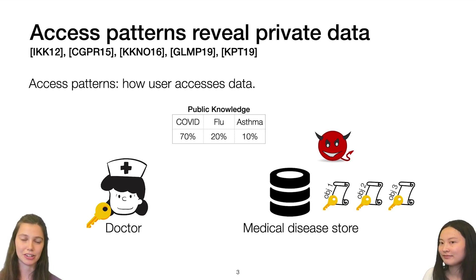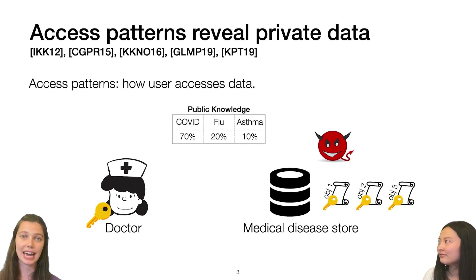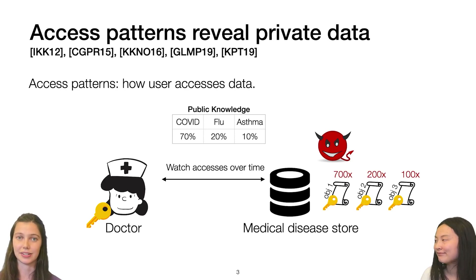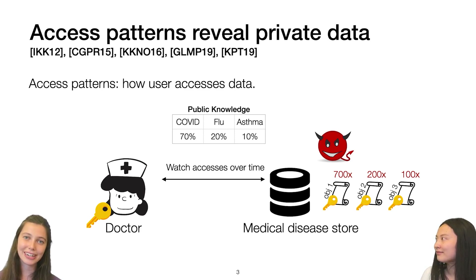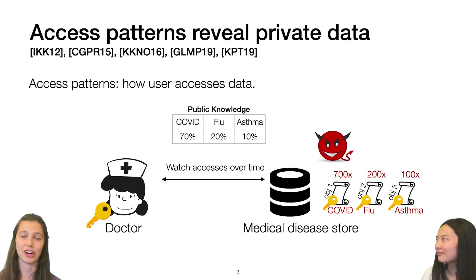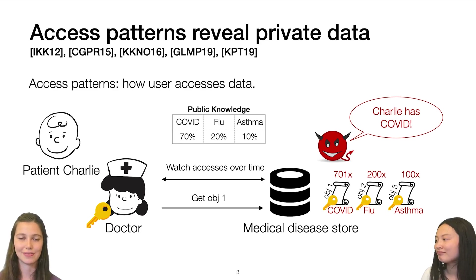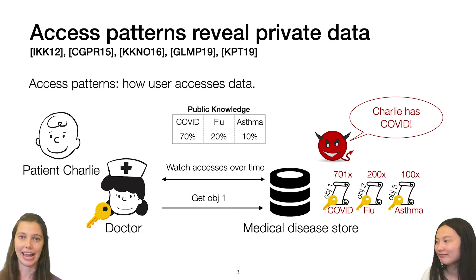Let's say there's some publicly known information about how frequently different objects are being accessed. We know, for example, that the COVID object is accessed about 70% of the time, the flu object about 20% of the time, and the asthma object about 10% of the time. The attacker watches the doctor interact with the medical disease store over time and sees how frequently different objects are accessed. It can then infer the object accessed about 70% of the time is probably the COVID object. So when unfortunate patient Charlie comes to the doctor's office and the doctor fetches object one, the attacker can infer that patient Charlie has COVID. Even though the contents of the records remained encrypted, the attacker could still learn private information just by watching the access patterns.